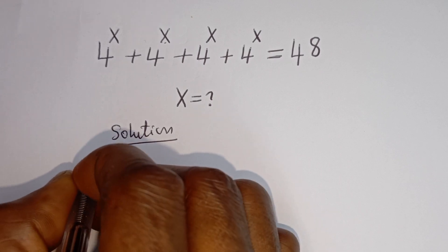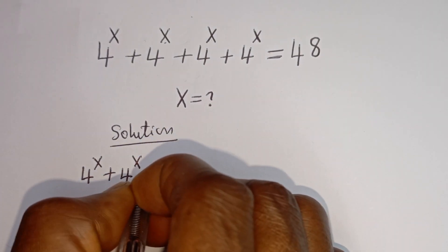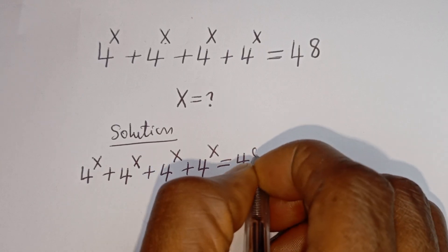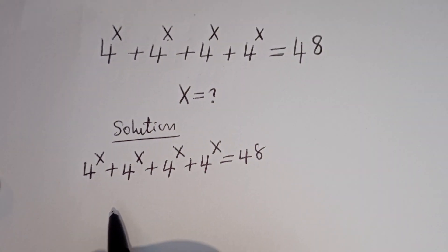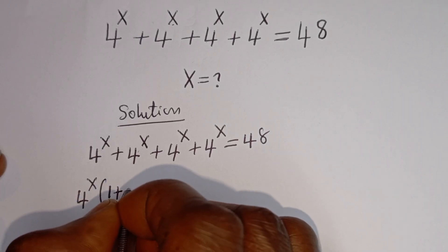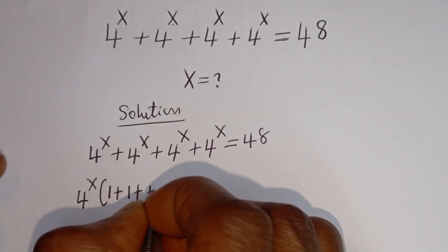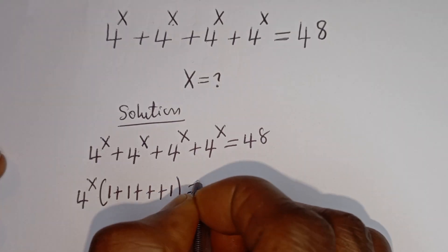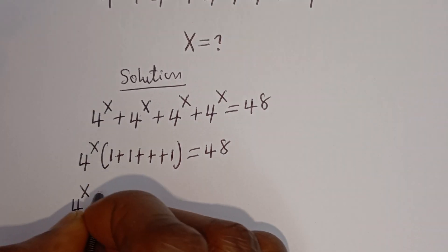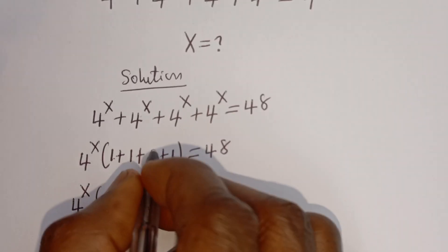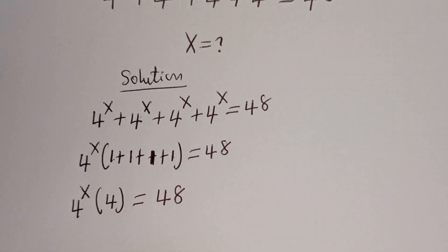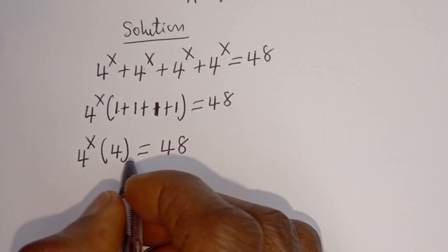We have 4 to the power of S plus 4 to the power of S plus 4 to the power of S plus 4 to the power of S is equal to 48. You can see that 4 to the power of S is common — let's factor it out. We have 4 to the power of S times bracket 1 plus 1 plus 1 plus 1, which is 4, is equal to 48.